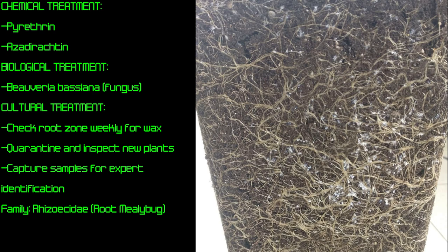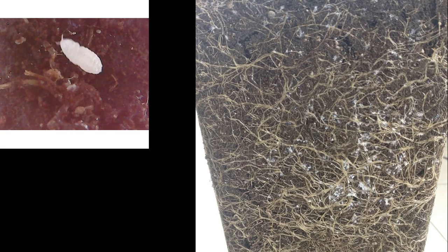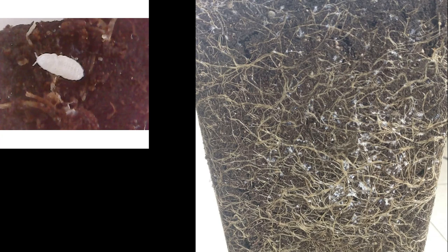The signs and symptoms of root mealybugs are a powdery, white, waxy production around the root system, which can sometimes be misconstrued as mycorrhizal fungi, like in this case. However, the root mealybug should be pretty obvious if you actually take a look at the roots themselves and see small, oblong, white, crawling insects.